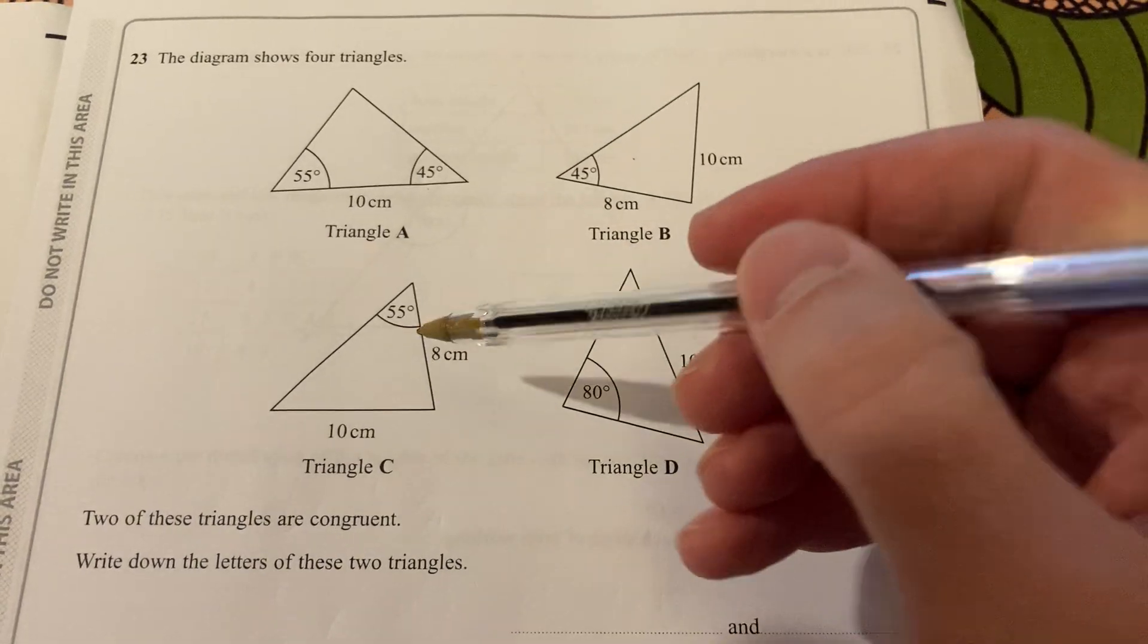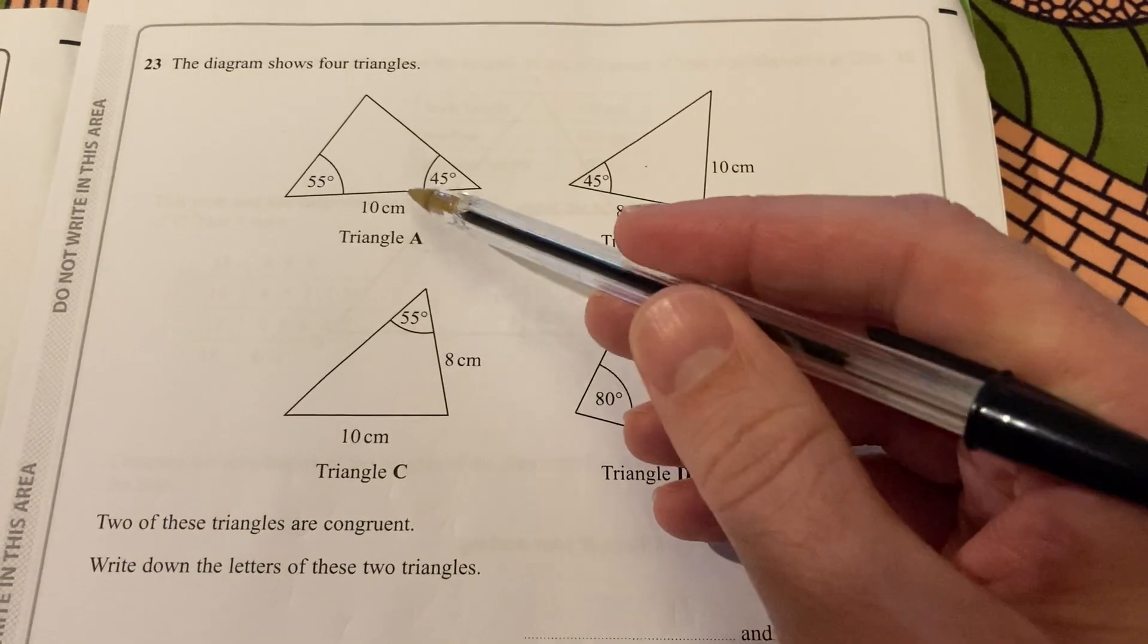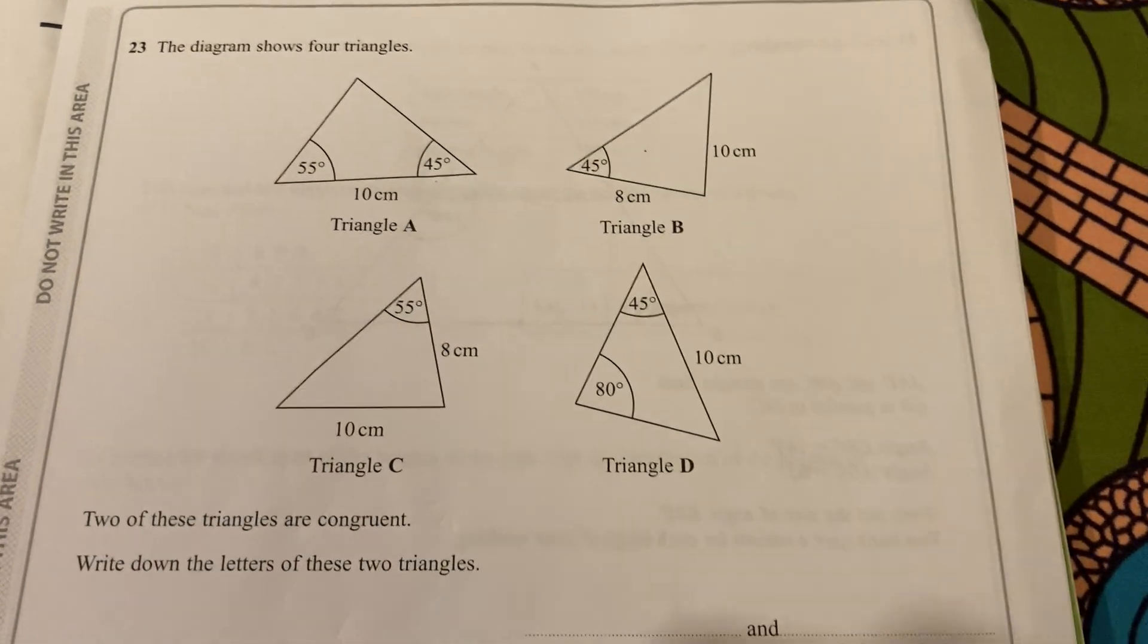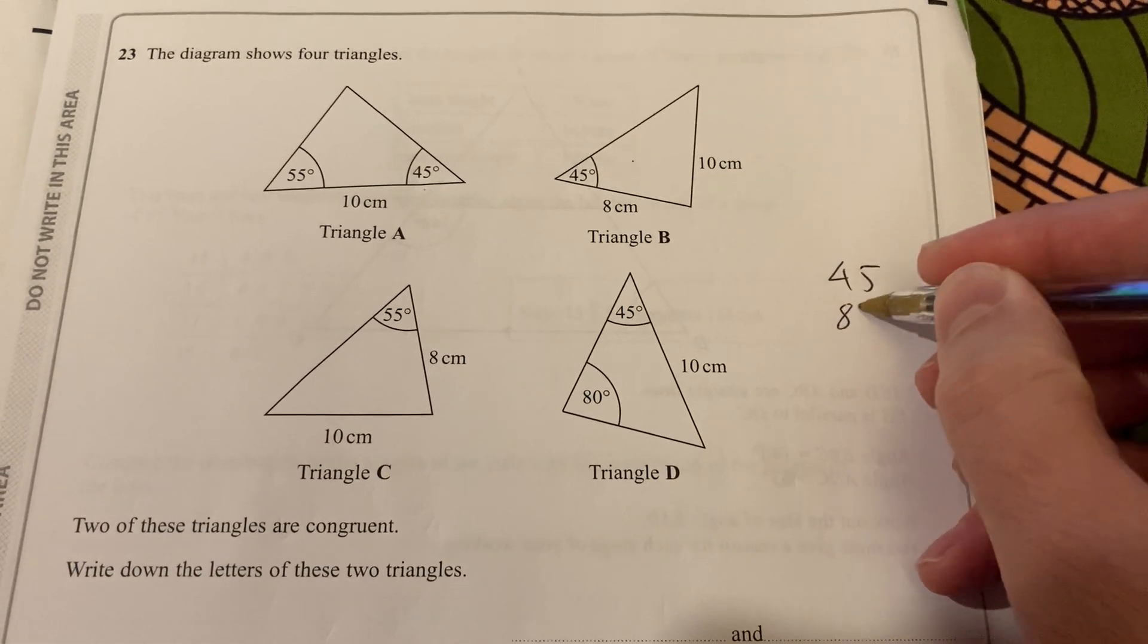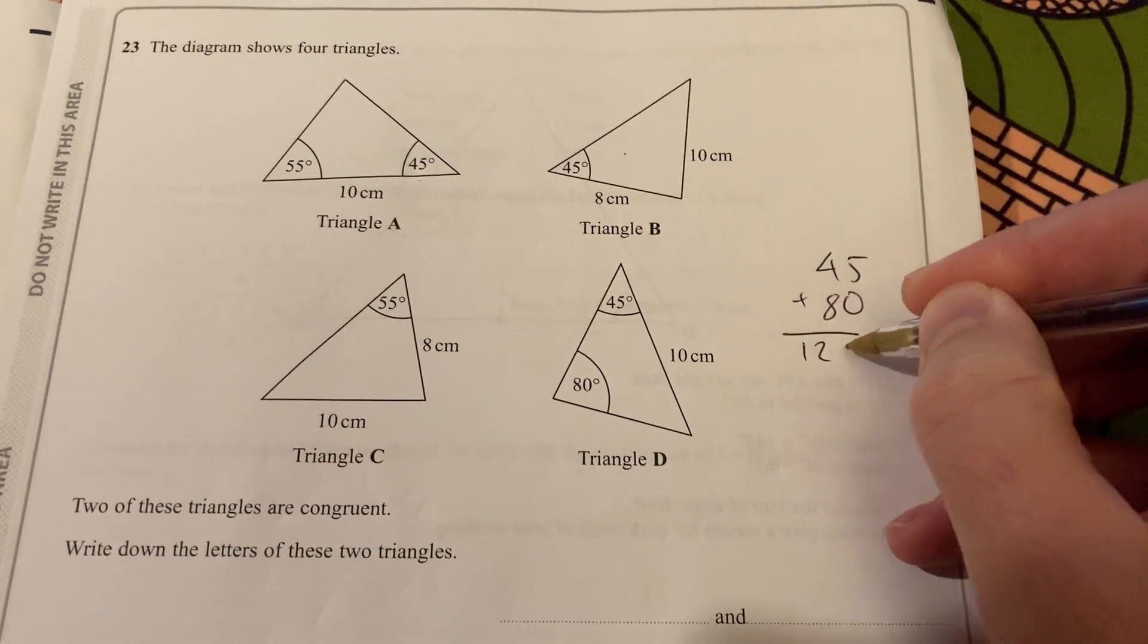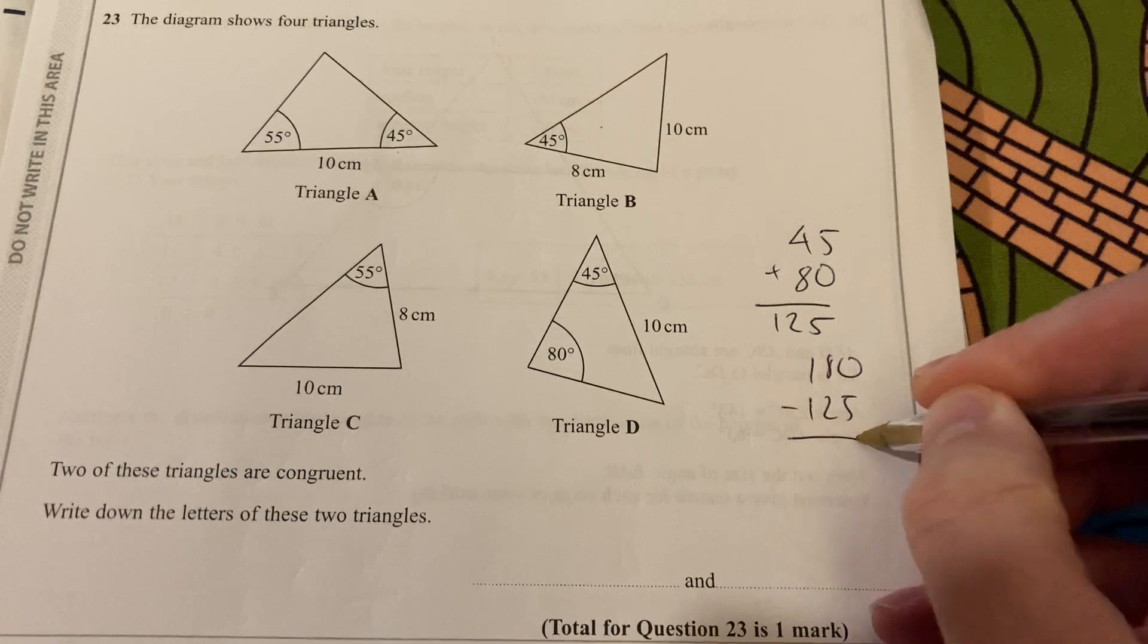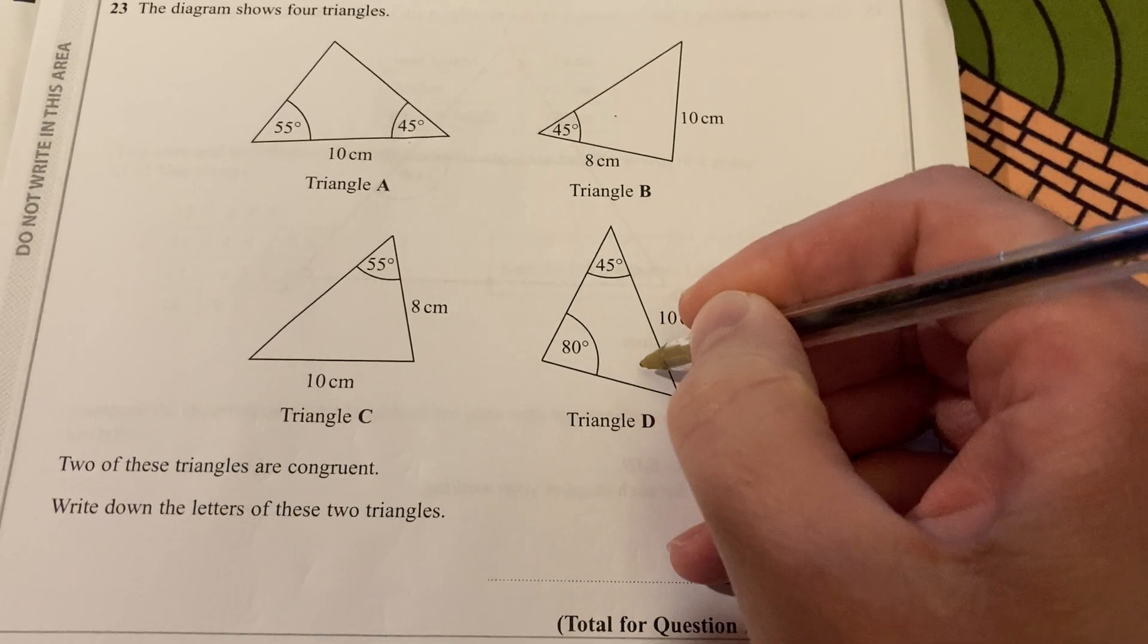Similarly, C, the 10 cm is the other side of the 55, so it cannot be congruent to that. Let's have a look at triangle D. Now, if I add those up, 45 and 80, that adds up to 125. And if I take that away from 180, I'm left with 55. So three angles of a triangle.